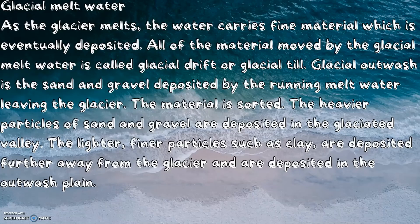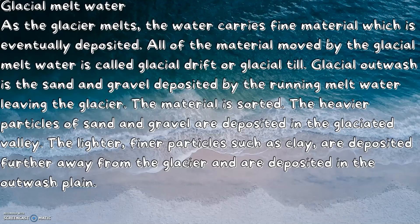Eventually the glacier will melt, and the water carries fine material which is eventually deposited. All material moved by glacial meltwater is called glacial drift or glacial till. Glacial outwash is the sand and gravel deposited by running meltwater leaving the glacier. The material is sorted: heavier particles of sand and gravel are deposited in the glaciated valley, whereas lighter, finer particles such as clay are deposited further away in the outwash plain.